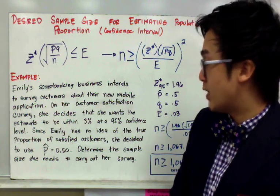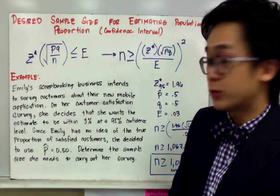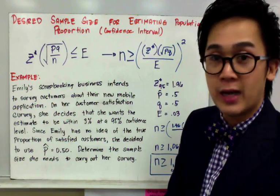Since Emily has no idea of the true proportion of satisfied customers, she decided to use P hat of 0.50. Let's determine the sample size she needs to carry out her survey.